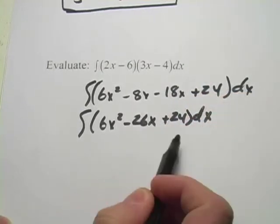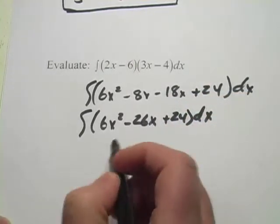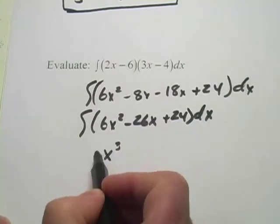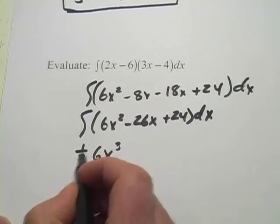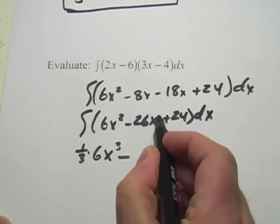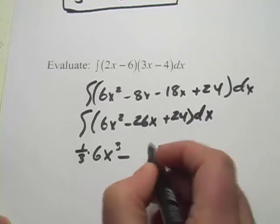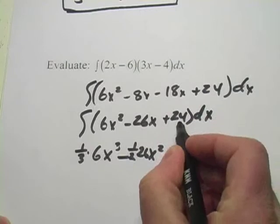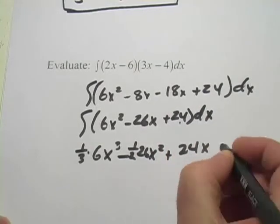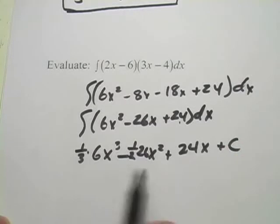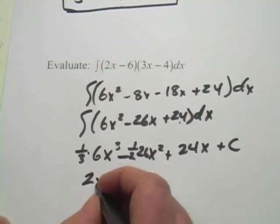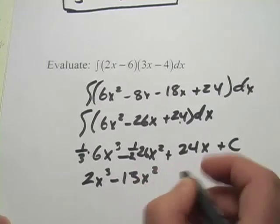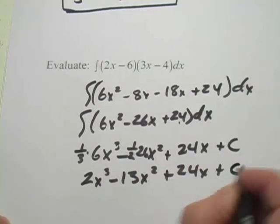And now let's go ahead and use our reverse power rule here. So we're going to raise the power here by 1 and then multiply by the reciprocal. So one-third. And then raise the power by 1, multiply by the reciprocal, so that's one-half. And raising the power by 1, we get 24x. And don't forget the constant. And then we can simplify a little bit. This is 2x cubed minus 13x squared plus 24x plus a constant.